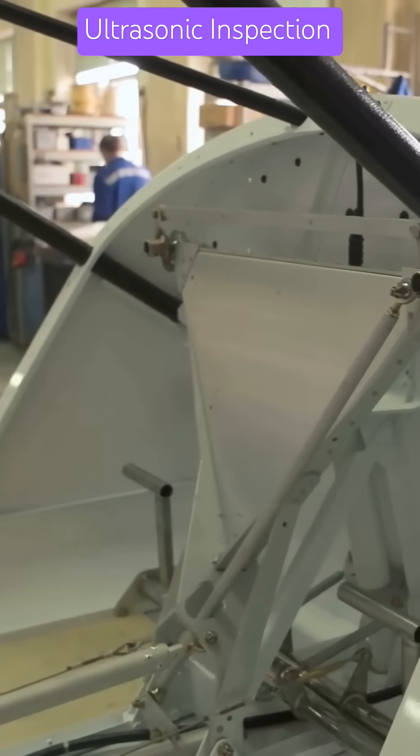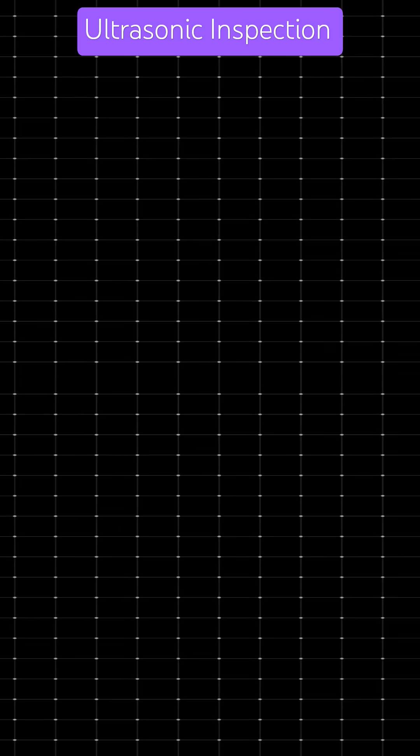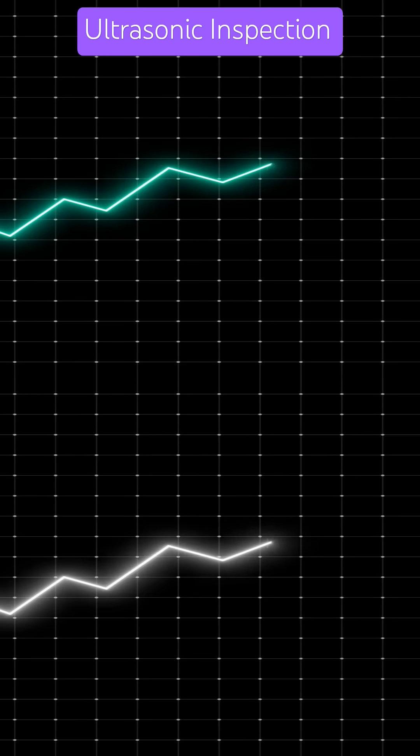Ultrasonic inspection uses high-frequency sound waves to detect cracks, corrosion, and voids in aircraft parts. It is one of the most trusted non-destructive testing techniques in aviation.